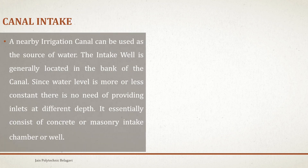We'll start with canal intake. A nearby irrigation canal can be used as the source of water. The intake well is generally located in the bank of the canal. Since the water level is more or less constant, there is no need of providing inlets at different depths. It essentially consists of a concrete or masonry intake chamber or well.